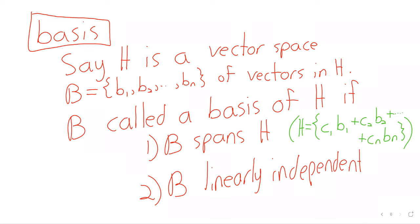A basis is a crucial definition you'll use constantly throughout the course. Informally speaking, a basis describes a vector space in the most efficient way possible. It spans the vector space, and it does so in the most efficient way — it's linearly independent, meaning there are no redundant vectors.